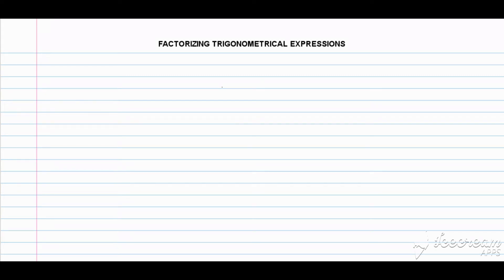Hello guys, today we're going to be looking at factorizing trigonometrical expressions. But before we start, let us talk about what factorizing is. Factorizing is writing an expression or a term as a product of factors. So for instance, if I have 6, it can be written as 2 times 3 — so I'd have factorized 6.